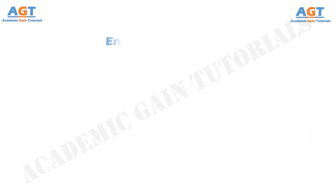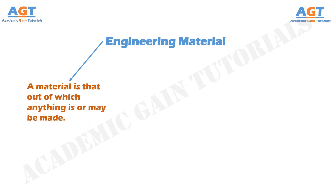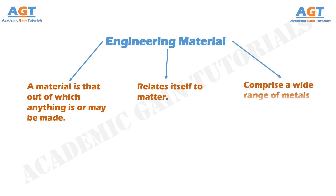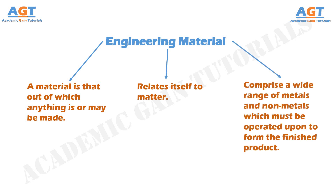Talking about materials, a material is that out of which anything is or may be made. A material generally relates itself to matter and is comprised of a wide range of metals and non-metals which must be operated upon to form the finished product.